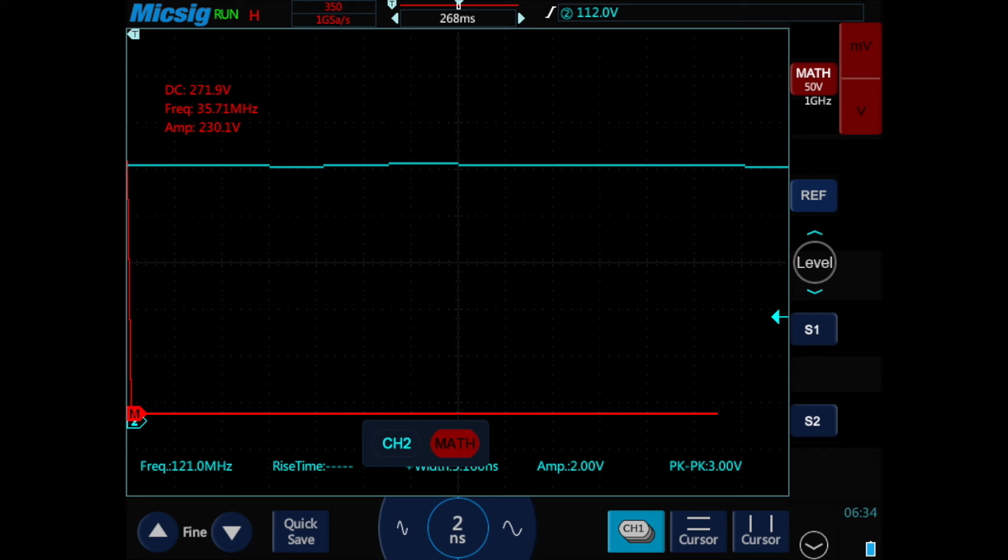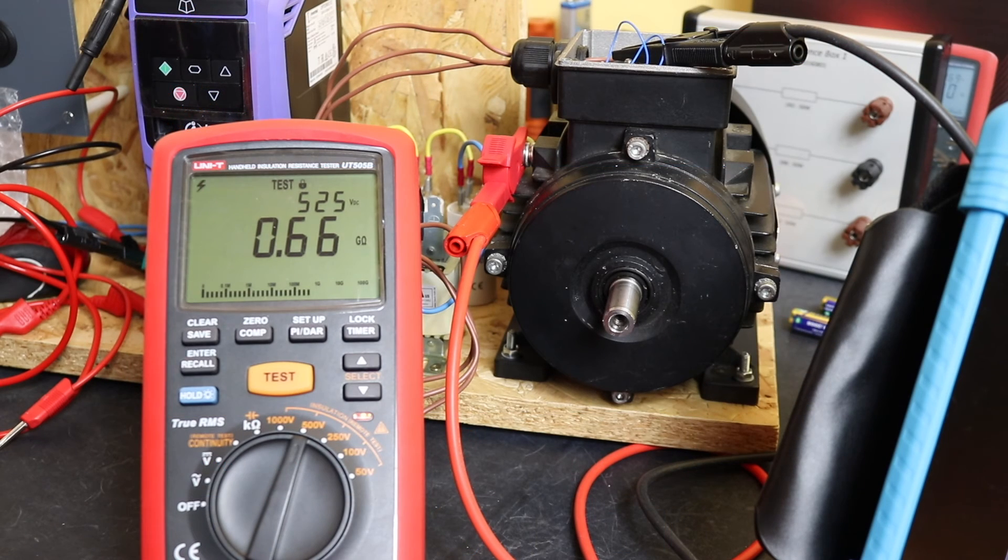There's nothing really untoward with regard to that that you would worry about too much. The problem that I'm having is that to get these readings on the oscilloscope, I'm using a high voltage probe, and unfortunately the resistance of that high voltage probe is affecting the reading.